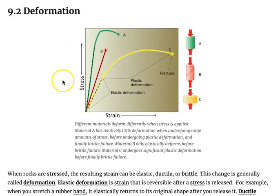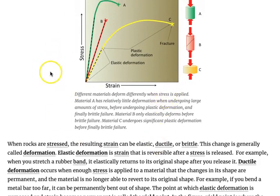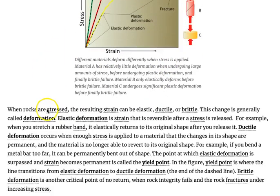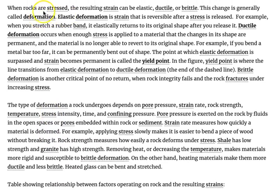Deformation. When rocks are stressed, the resulting strain can be elastic, ductile, or brittle. This change is generally called deformation. Elastic deformation is a strain that is reversible after a stress is released. For example, when you stretch a rubber band, it elastically returns to its original shape after you release it.